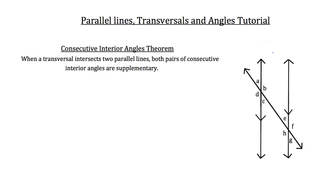Let's take a look at the diagram off to the right. We have lines 1 and 2 and our transversal that's intersecting those two lines. You can tell that lines 1 and 2 are parallel to each other because of the parallel arrow indicators. Consecutive interior angles occur when that transversal intersects two parallel lines, and our consecutive interior angles are going to be angles like B and E.